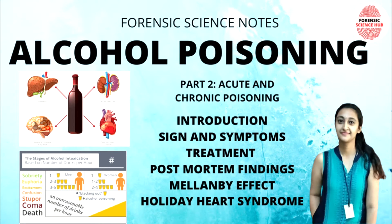Welcome back to the channel. Today I'm going to talk about acute and chronic alcohol poisoning. In the previous video, I discussed what alcohol poisoning is, the properties of ethanol as the main ingredient in alcoholic drinks, country liquors, absorption and metabolism, and factors affecting absorption rate. In today's video, I'll discuss two types of poisoning — acute and chronic — along with their signs and symptoms, treatment, post-mortem findings, the Mellanby effect, and Holiday Heart Syndrome.